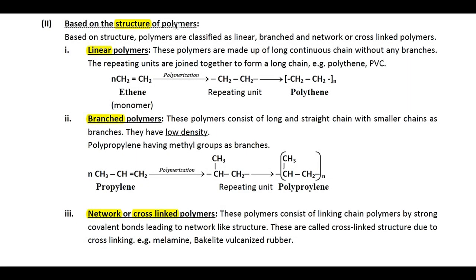The next classification is based on structure of polymers. Polymers are classified as linear, branched, and network (also called cross-linked) polymers. Linear polymers are made up of a long continuous chain without any branches — all atoms are linked in a straight chain. Examples include polythene from ethene, and PVC (polyvinyl chloride) from vinyl chloride.